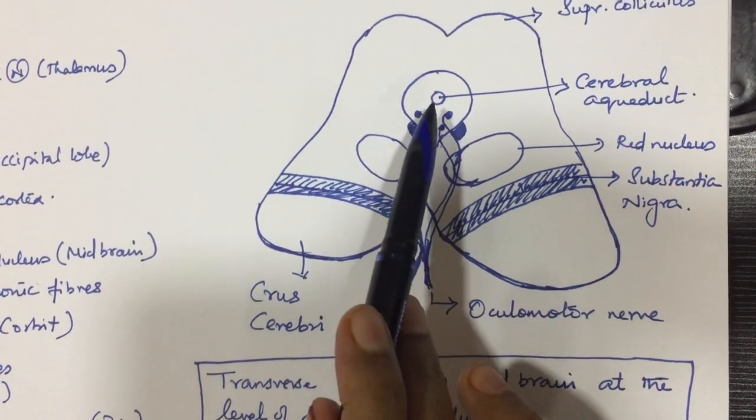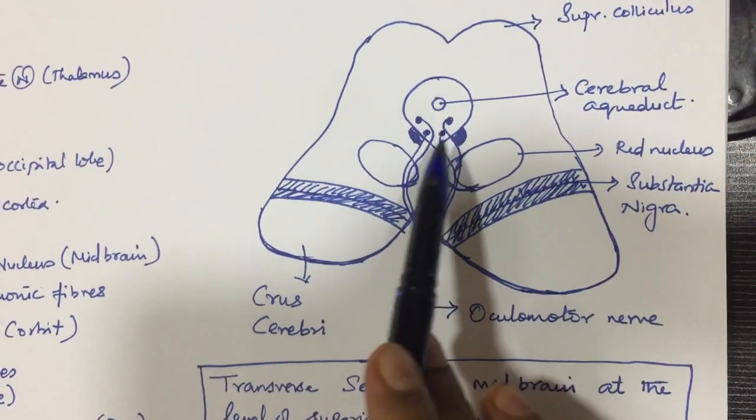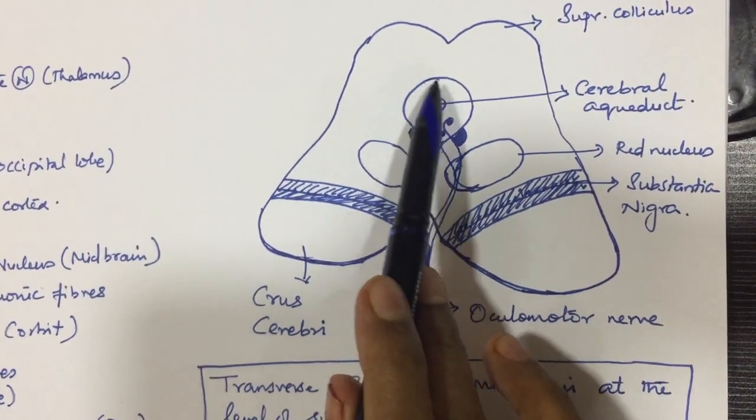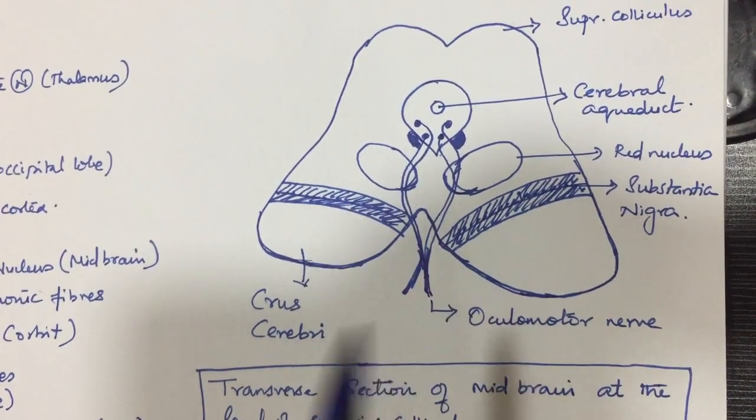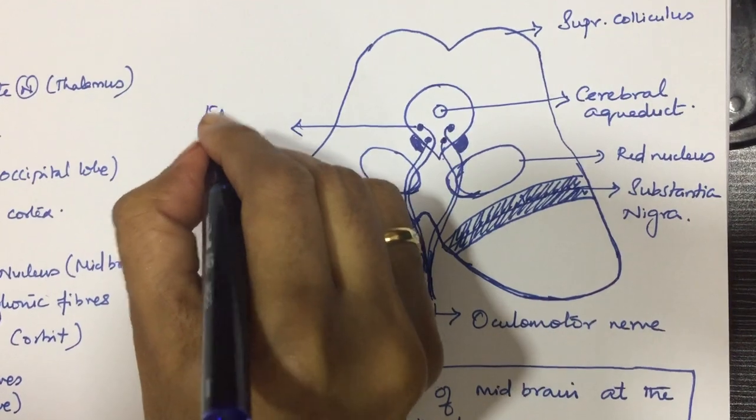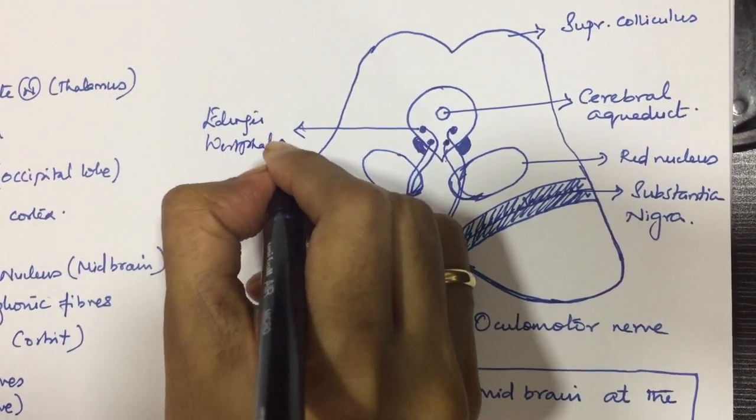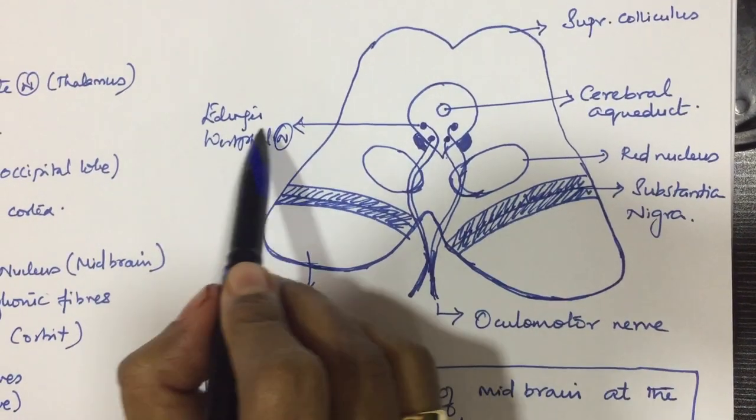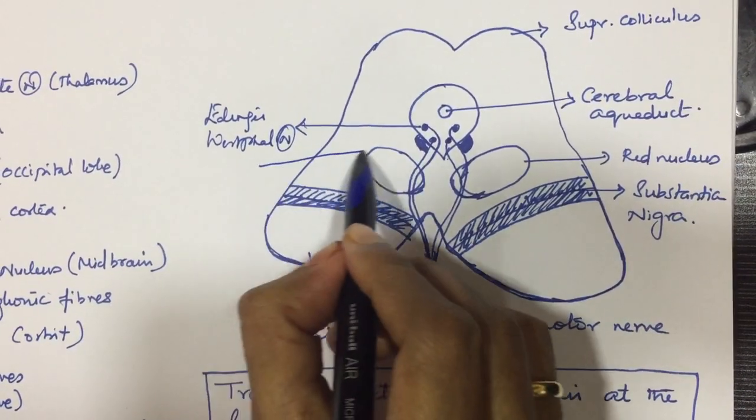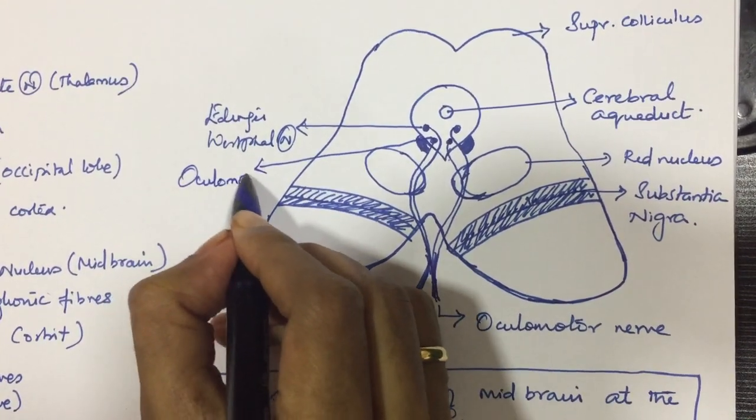This is the cerebral aqueduct and surrounding this is a group of neurons which is also called periaqueductal gray. The nucleus here is the Edinger-Westphal nucleus which is a parasympathetic nucleus, and this nucleus is the oculomotor nucleus.